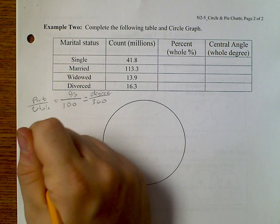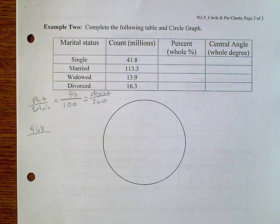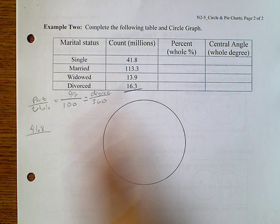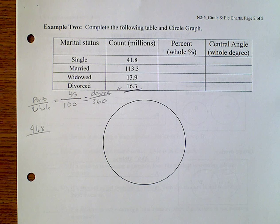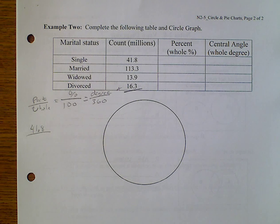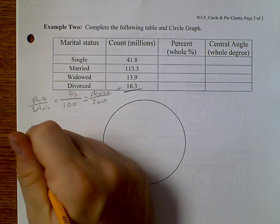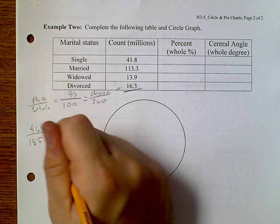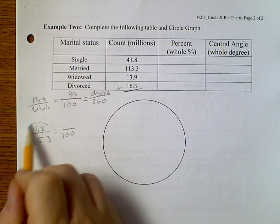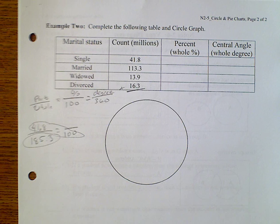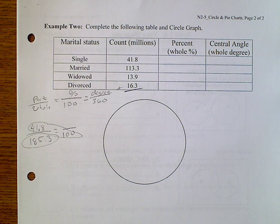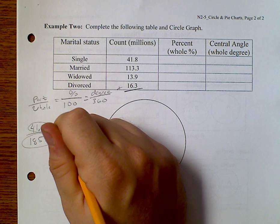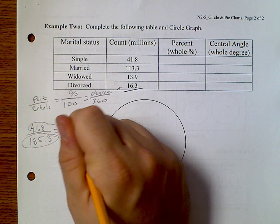So now we're going to go ahead and start working all of these out. So 41.8 over, well I need to figure out what my whole is. So I'm going to add all of these up. 41.8 plus 113.3 plus 13.9 plus 16.3 gives us 185.3. It has to equal something over 100. So I cross multiply and divide. 41.8 times 100 divided by 185.3 gives me about 22.6%.